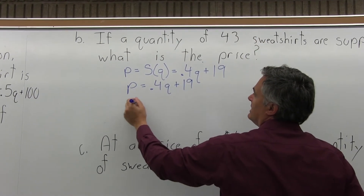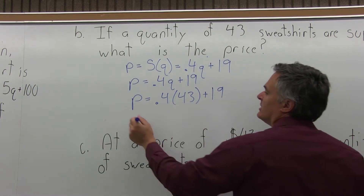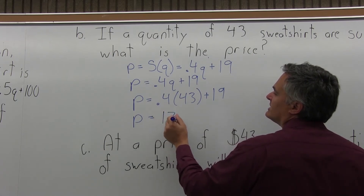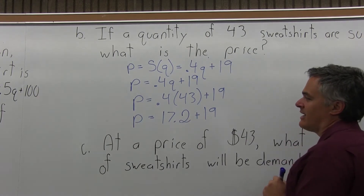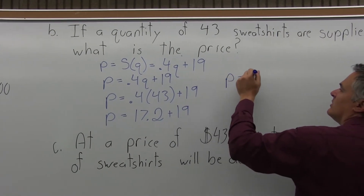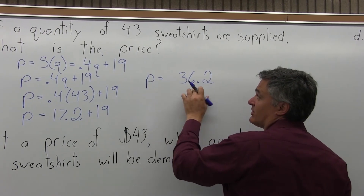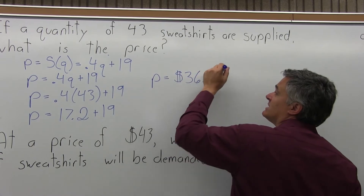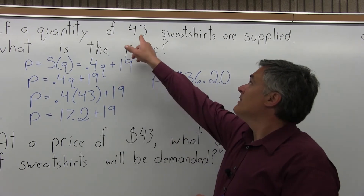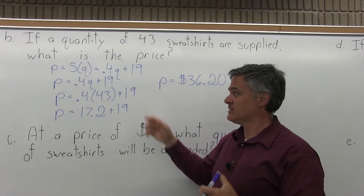So P equals .4 times 43 plus 19. P equals .4 times 43, which multiplies out to 17.2, and we add 19. When you add 17.2 plus 19, we get P equals 36.2. Because this is P for price, that 36.2 is really $36.20. So if the company makes 43 sweatshirts, that means they're able to sell them for $36.20 each.